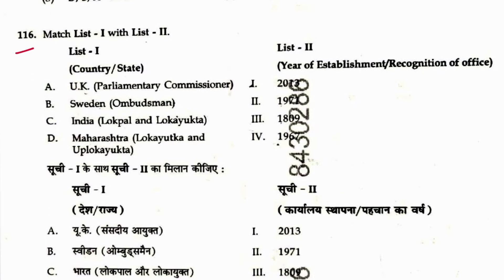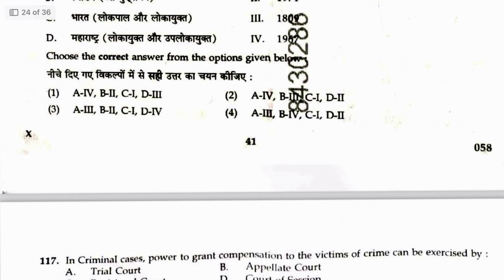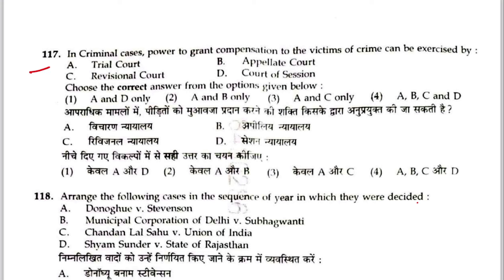Question 116: Match country and year of recognition of ombudsman/lokpal. Sweden ombudsman — 1809. UK Parliamentary Commissioner — 1967. Maharashtra Lokayukta — 1970. Indian Lokpal and Lokayuktas Act — 2013. Sequence is 4, 3, 1, 2. Answer is 2.